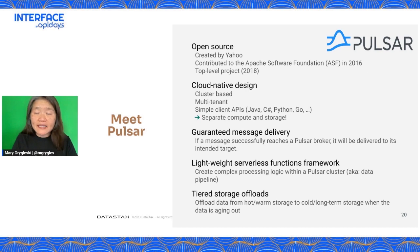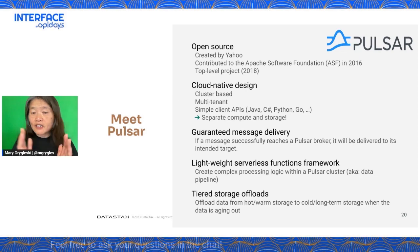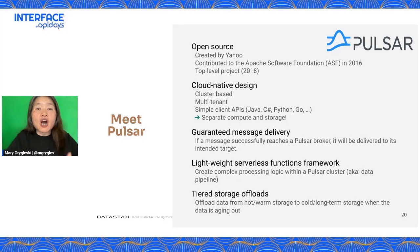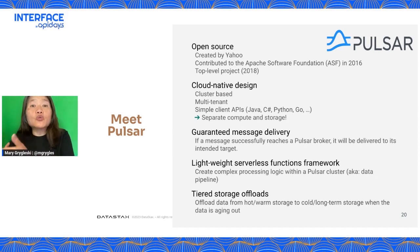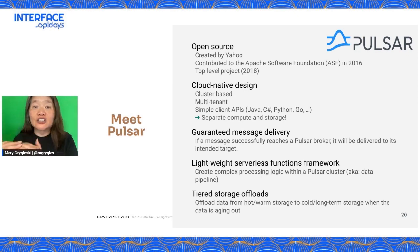Messages in Pulsar have guaranteed delivery — very important. Pulsar Functions allow data to be transformed as it travels through the pipeline in a lightweight fashion. Pulsar also has tiered storage offloading: in the cloud you get charged for primary storage, but inactive or cold messages can be moved to cheaper storage like S3 buckets or Google File System. Pulsar has this built in natively — you configure it, and over a certain period inactive messages are offloaded to second-tier storage at lower cost.